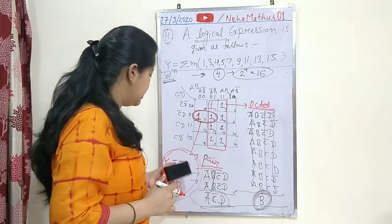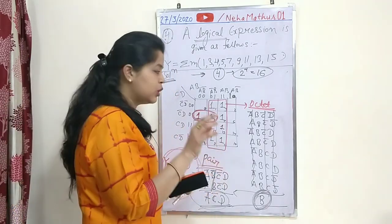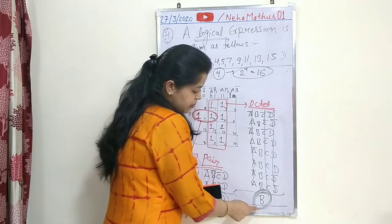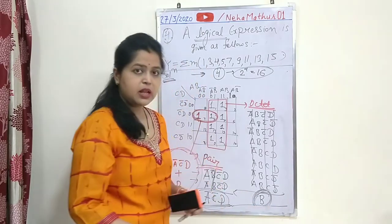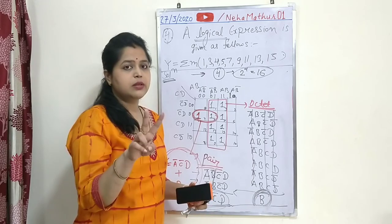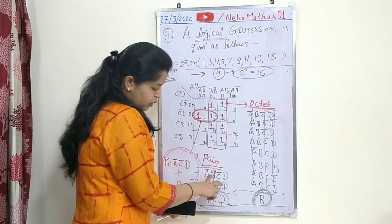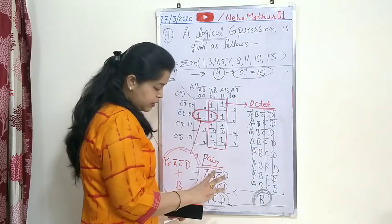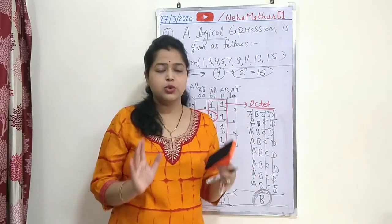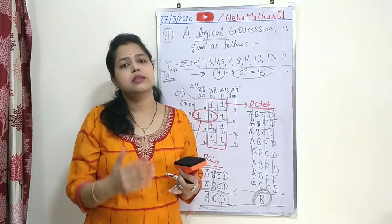One general conclusion: in a pair, one variable is eliminated and you get n-1 variables in the result. In a quad, two variables are eliminated, leaving two variables. In an octet, three variables are eliminated, leaving only one variable. So larger groups always produce more simplified results, which is why octet is always preferred over quad, and quad over pair.